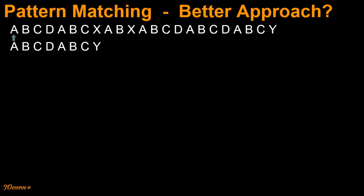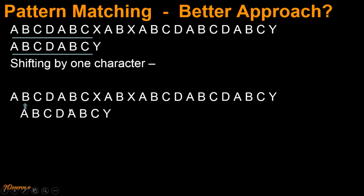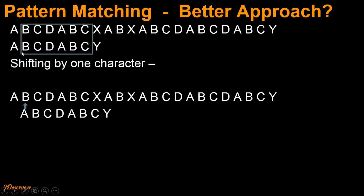As usual, we start matching the pattern to the text from the leftmost end. As we go on matching the characters from the pattern, you can see that all the characters would match except the last character y. So all the characters from the pattern have matched except the last character. Now recall that in the naive approach, what we would do is shift the pattern by one character to the right. That would get us into a state where this A is now compared to this B of the text. Let's come back to the state where Y mismatched with X. All the characters before this Y have matched with the text, which also implies that the last 6 characters before Y have matched with the text.